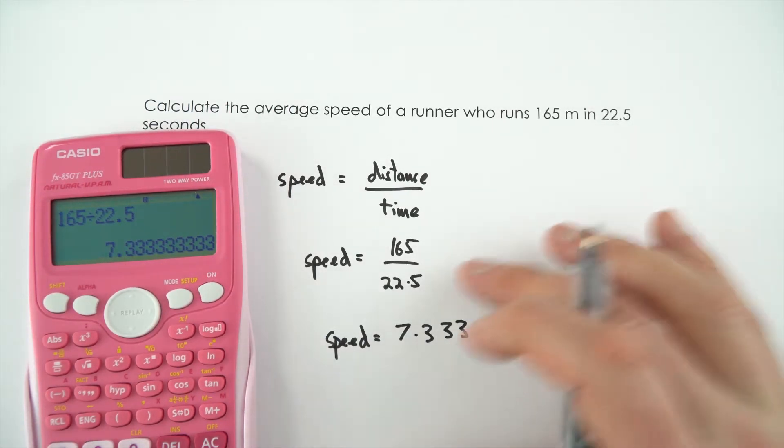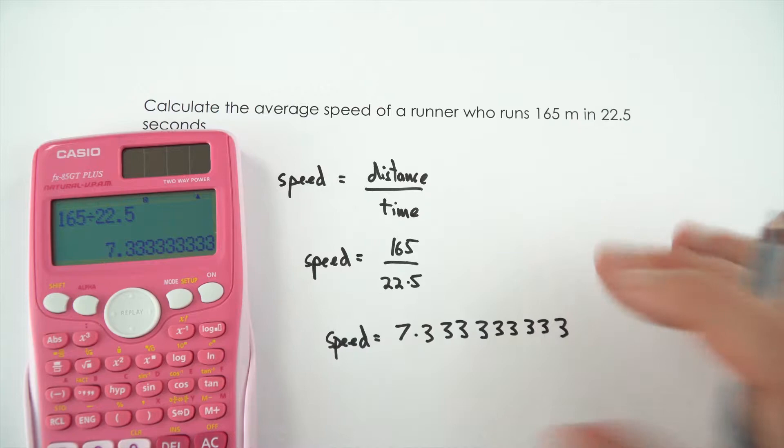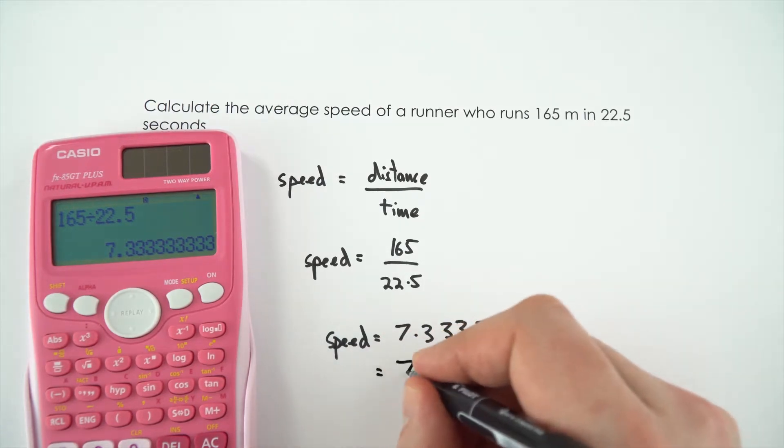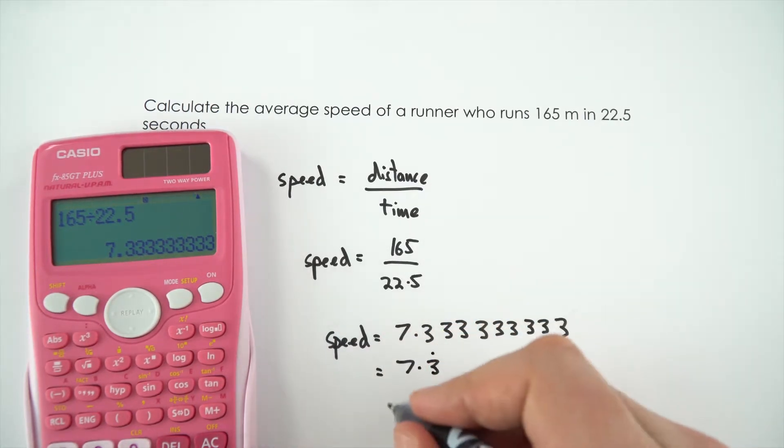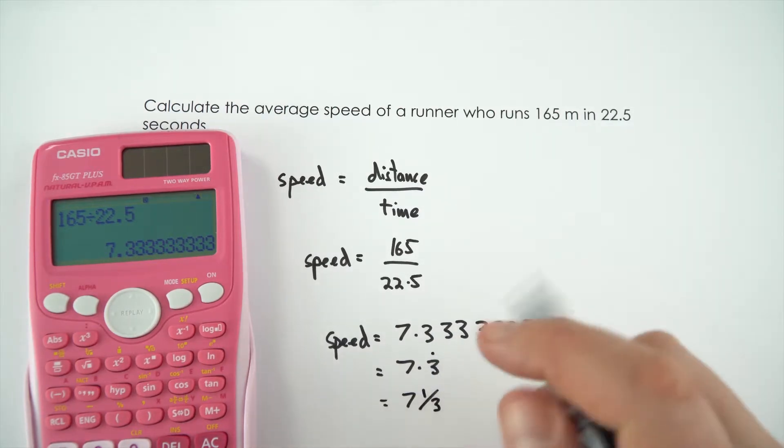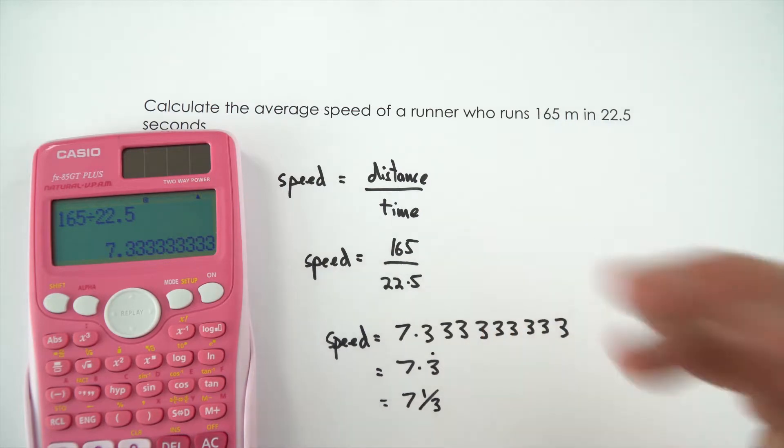Now what you shouldn't do is just write down the whole calculator display. Something else that isn't maybe appropriate is putting 7.3 recurring with a dot, or even 7 and a third. Although these are very precise, we're not in the maths class now, we're in the world of physics.